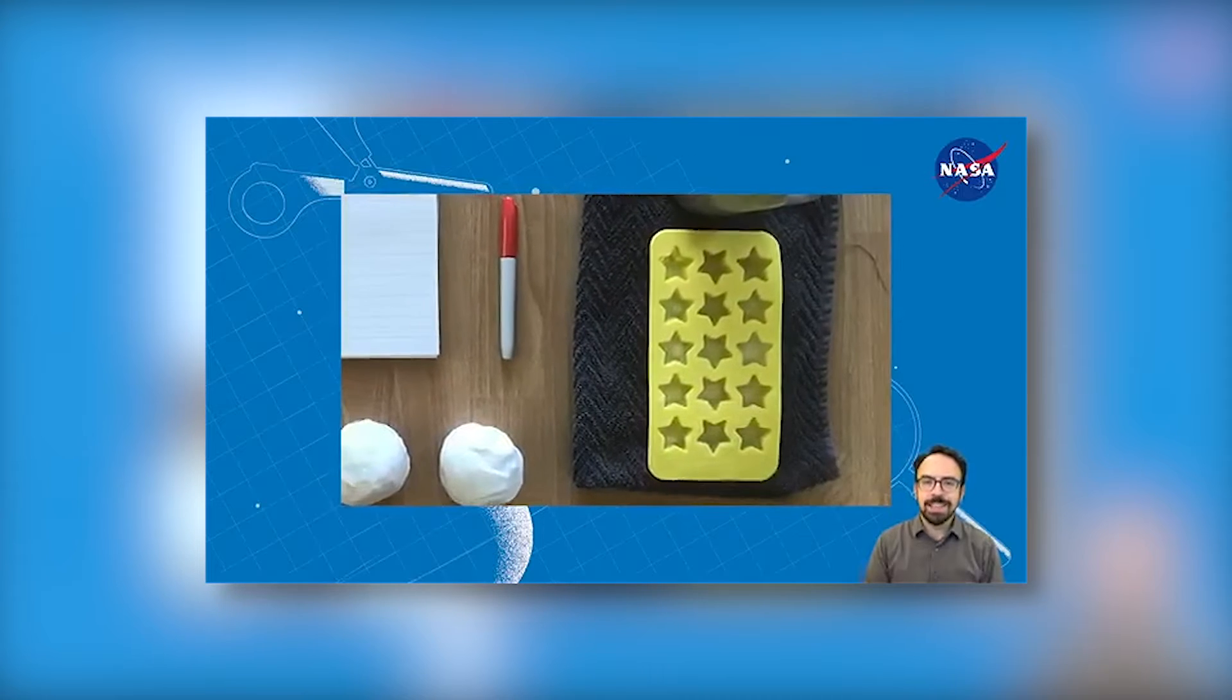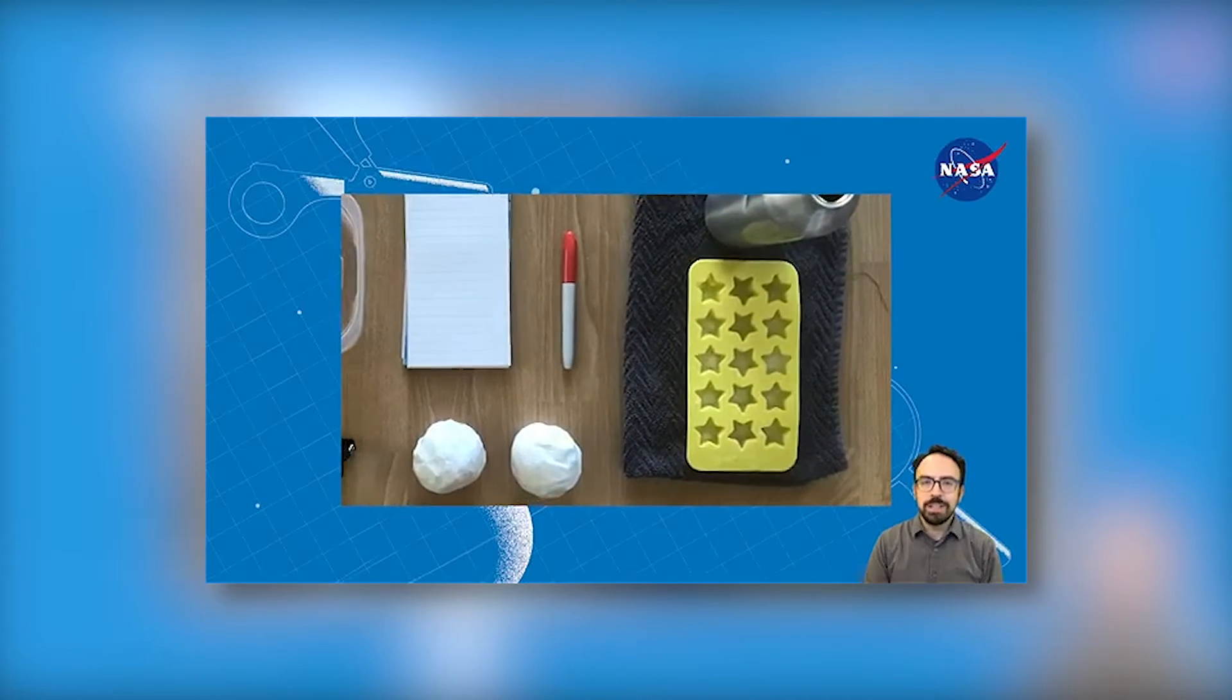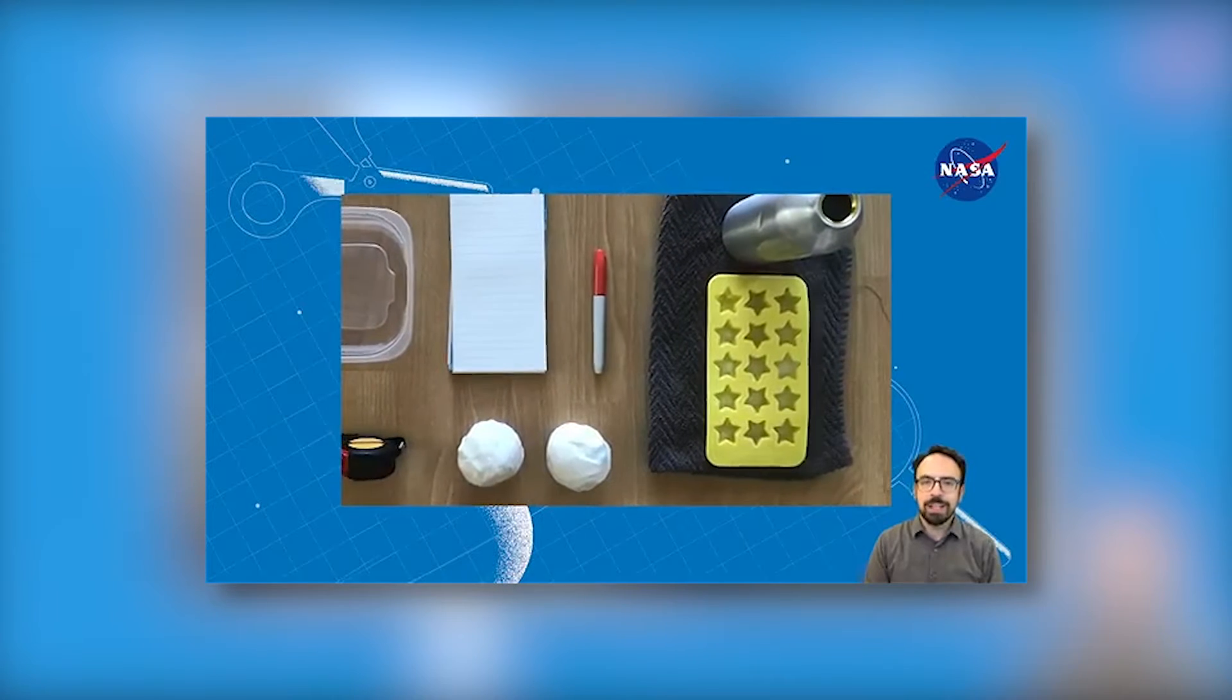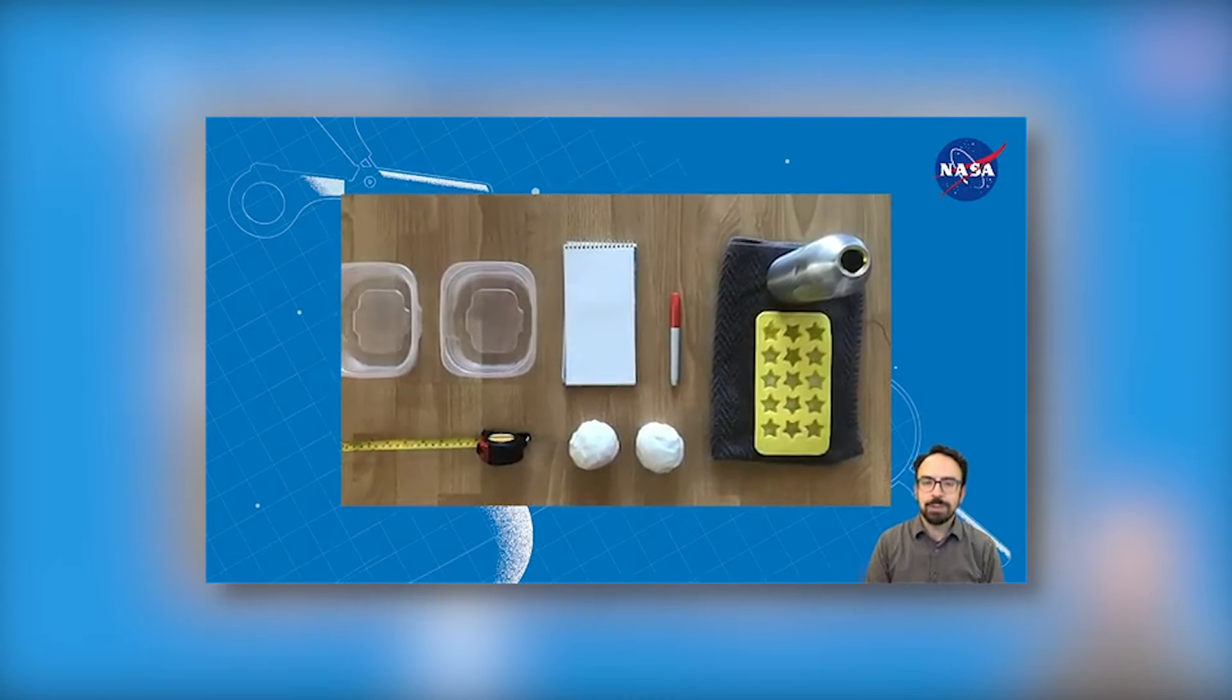That brings us to our next item, ice. Having a full tray of ice will be helpful. You might not need all of it, but if you have that much, that'd be great. Then, get some cold water, a ruler if you have one, and a marking pen if you have one.